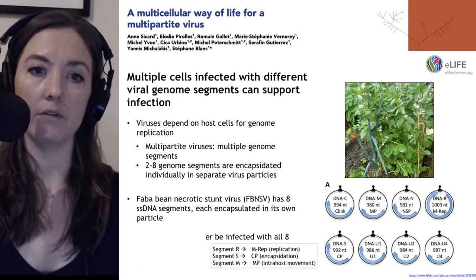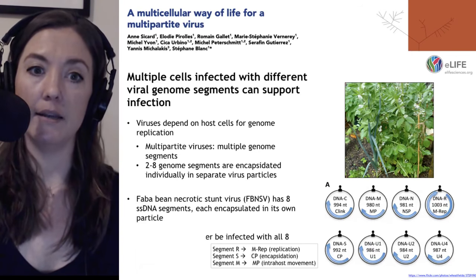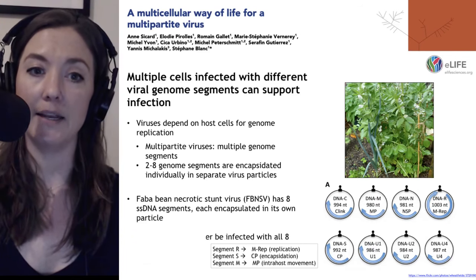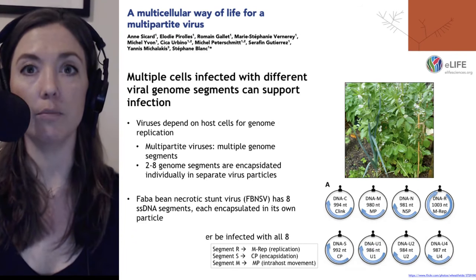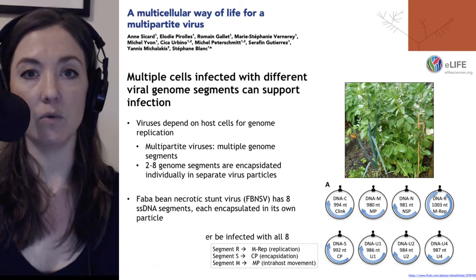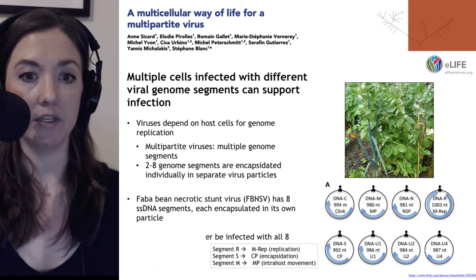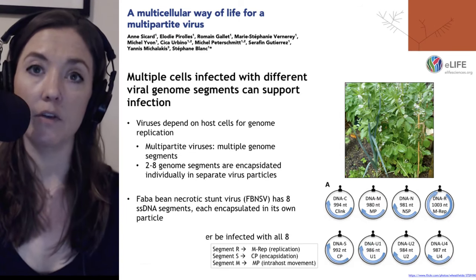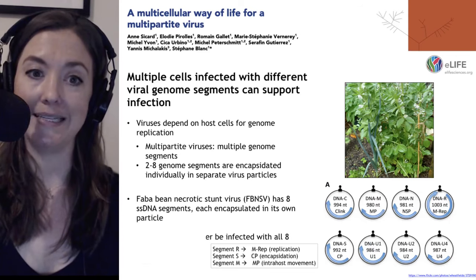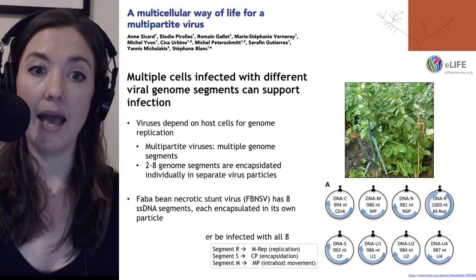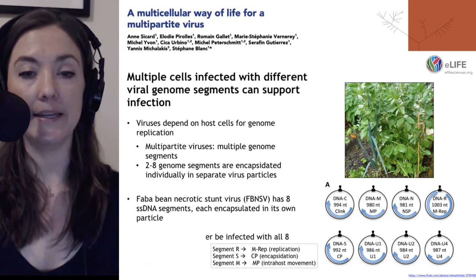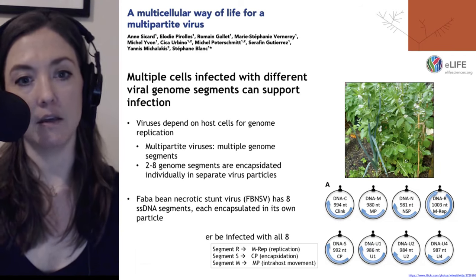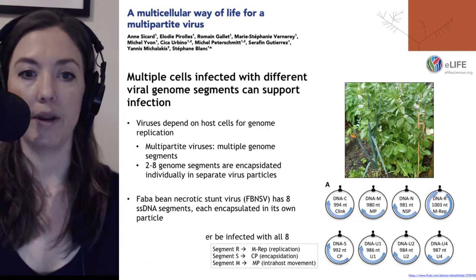Some multi-partite viruses can partition those genome segments and encapsidate them separately into viral particles, as is the case with the virus being studied here: the Faba Bean Necrotic Stunt Virus, or FBNSV. This virus has eight different single-stranded DNA genome segments, and each one is encapsidated into its own particle. This is a virus that infects plants — the Faba Bean is shown at the right-hand side.